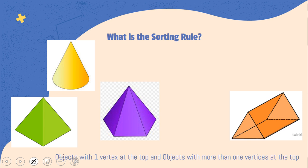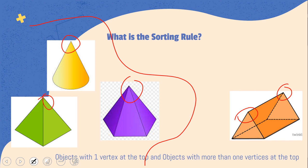So, what is the sorting rule for these shapes? Well, I've sorted them based on the fact that they all have one vertex at the top. And this one has two. So, objects, which is the word that we use for 3D shapes. Objects with one vertex at the top, that's this part. And objects with more than one vertices at the top. So, that's one way that I was able to sort them.